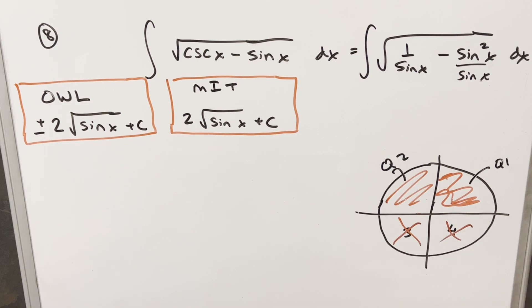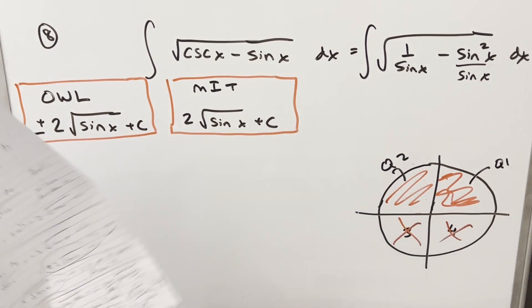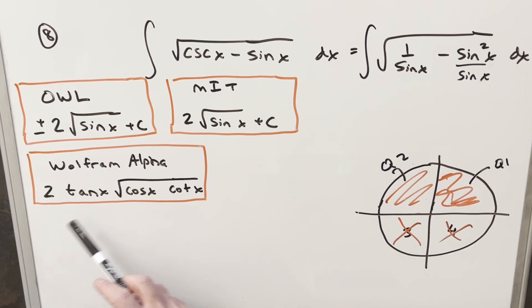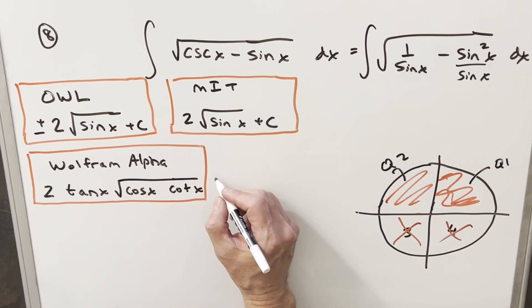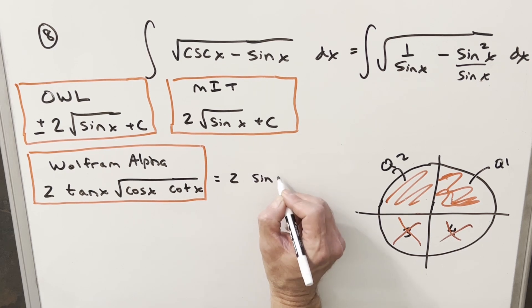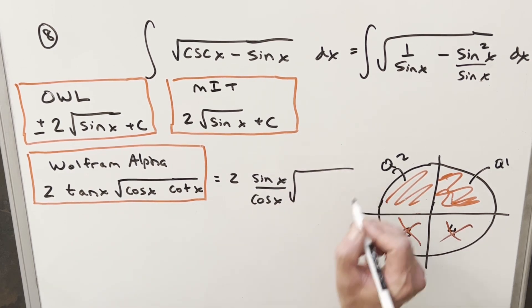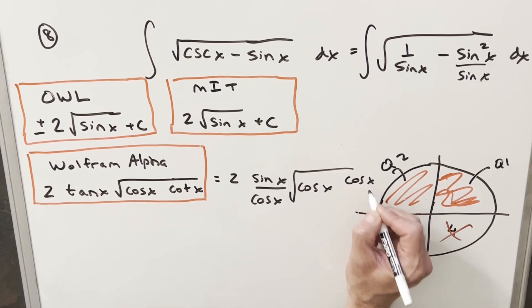And now the really interesting solution came from Wolfram Alpha and I wrote that down. So let me copy that onto the board while you guys aren't looking. So Wolfram Alpha solution is two tan x times square root of cosine x cotangent x. That was kind of surprising, but what I want to do is let's break it down into sine and cosines and see if we can simplify this and make some sense out of it. So I'm going to break down tan as sine x over cos x. And then cotangent we'll write as cosine x over sine x.